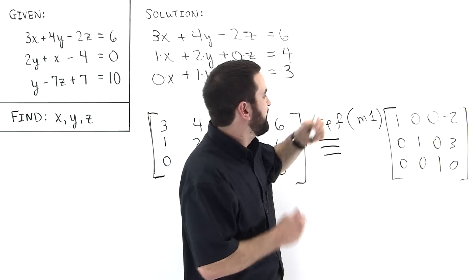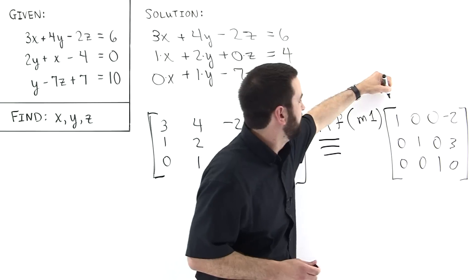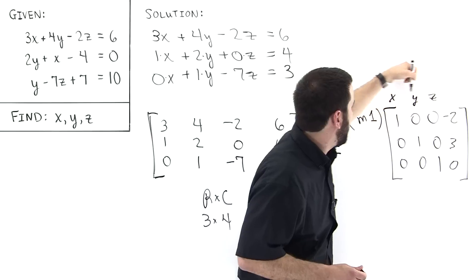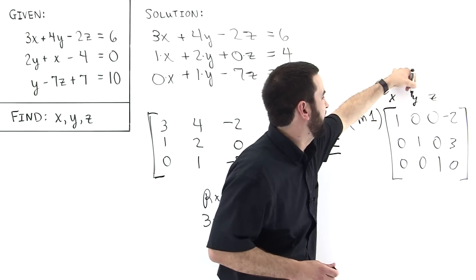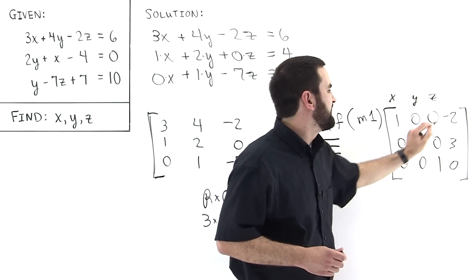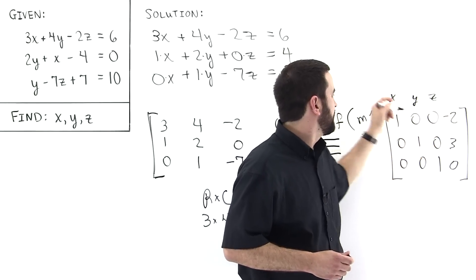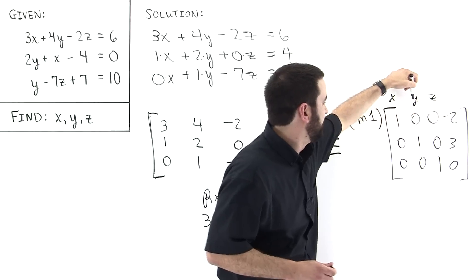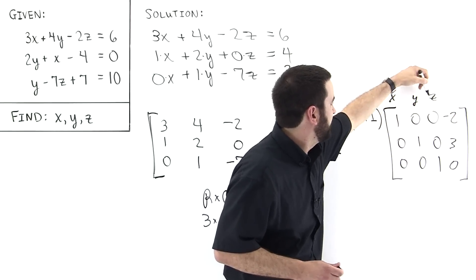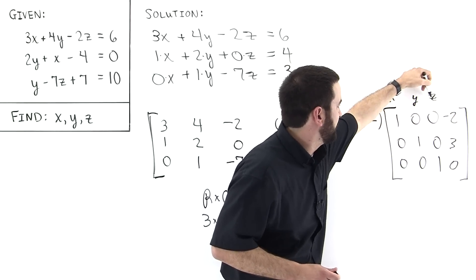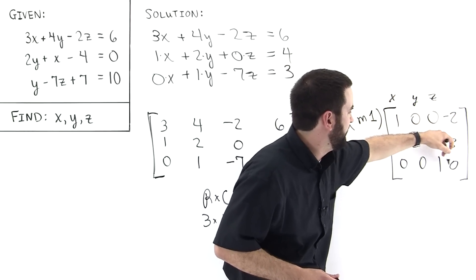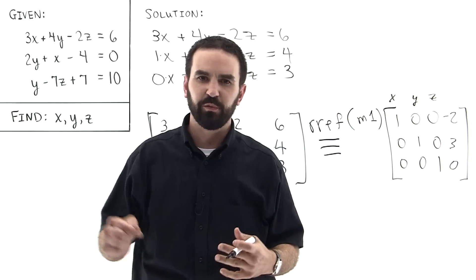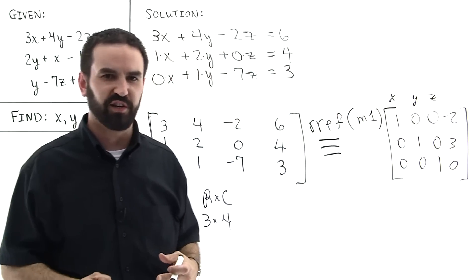So we have solved the system. In terms of the x column, the y column, and the z column — you come down to the 1 in each column: this is x, this is y, and coming into the z column down to the 1, this is z. So z equals 0. We solved it with the push of a button, just like that.